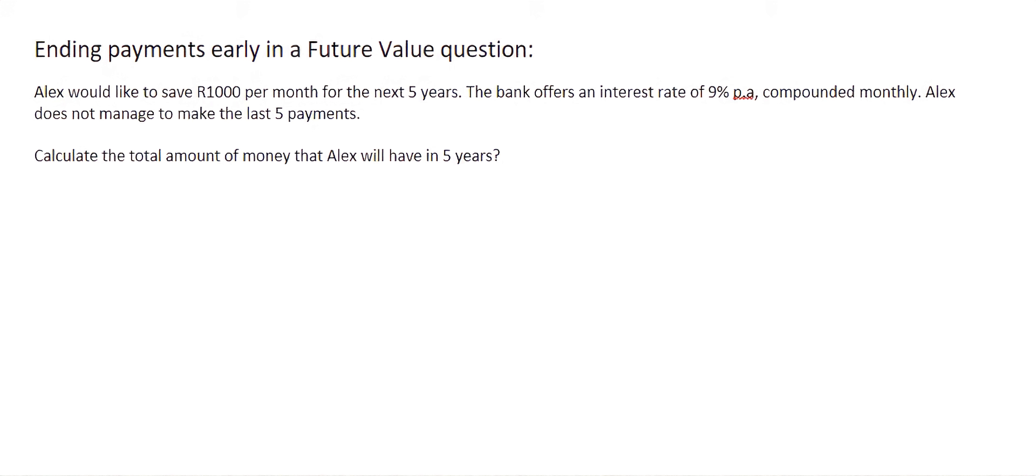In this question, we have a person called Alex who is wanting to save 1,000 Rand per month for the next five years. The bank offers an interest rate of 9% per annum, compounded monthly. Alex does not manage to make the last five payments. Calculate the total amount of money that Alex will have in five years.